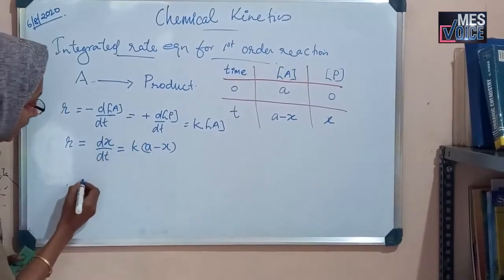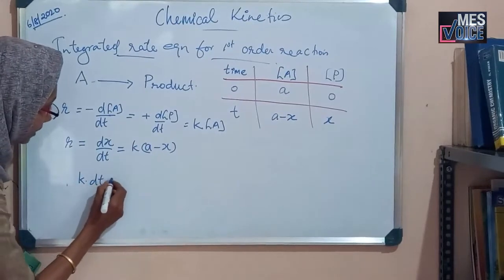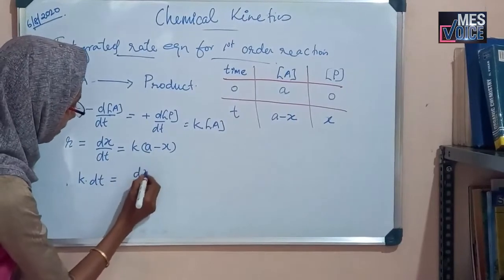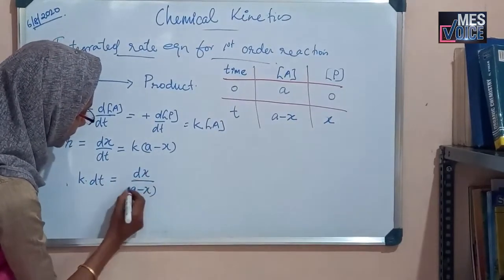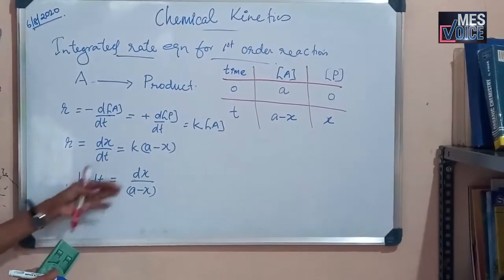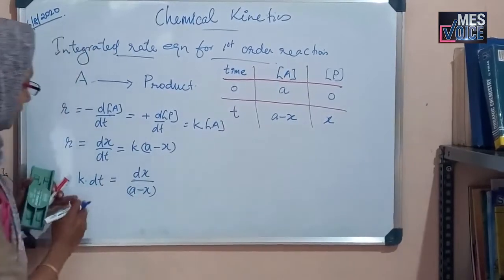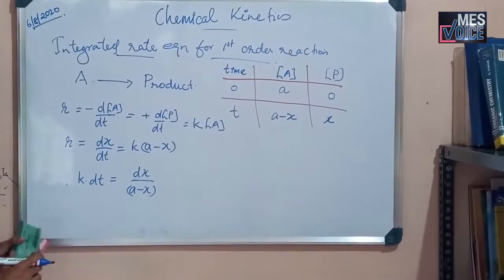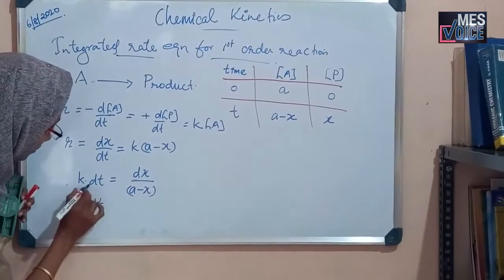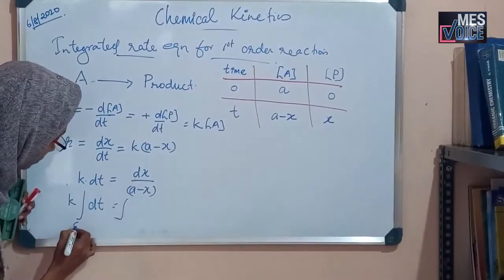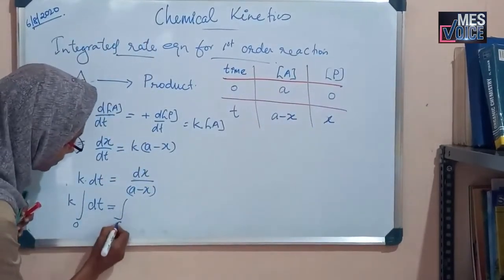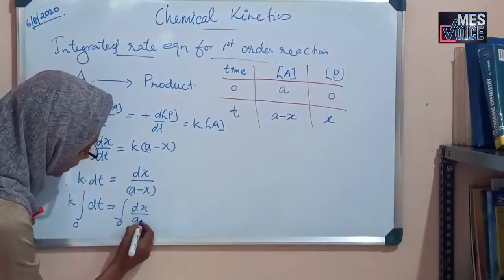Then, rearranging this equation, K dt is equal to dx by (A minus X). That is, bringing the similar variables together on the same side. Then, integrating this equation between the limits: K dt, the limit when t is equal to 0, the concentration of X is equal to 0. The limit is 0, that is, dx by (A minus X).